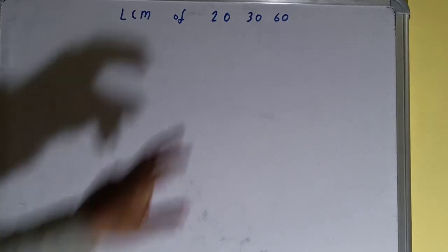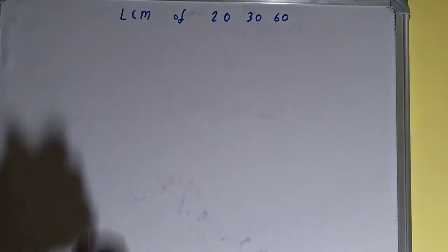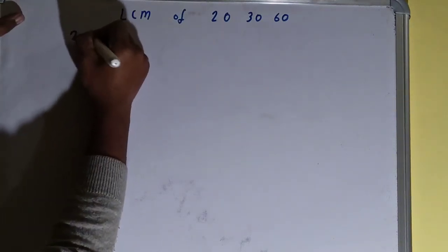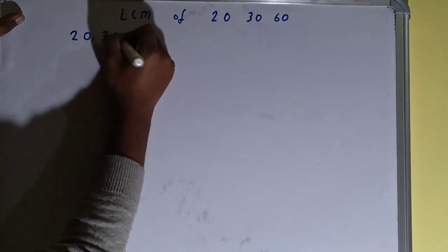Hello friends, and in this video I'll be helping with the LCM of the numbers 20, 30, and 60. So let's start. To find it out, we need to write all three numbers like this: 20, 30, 60.